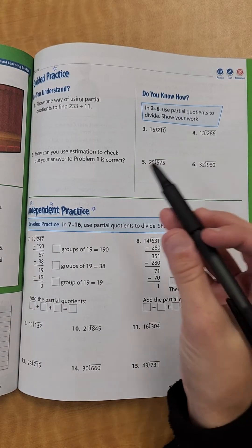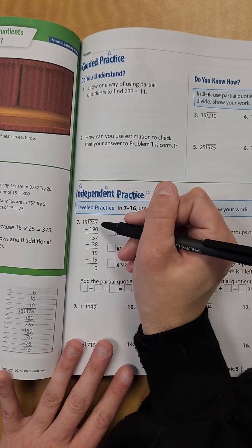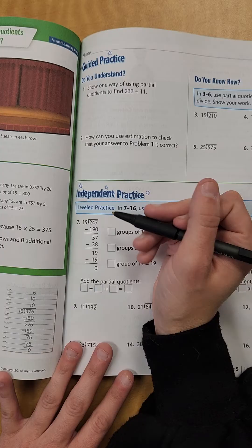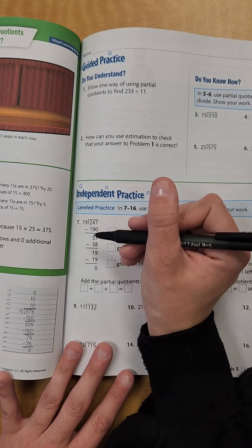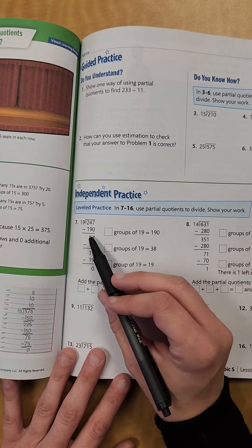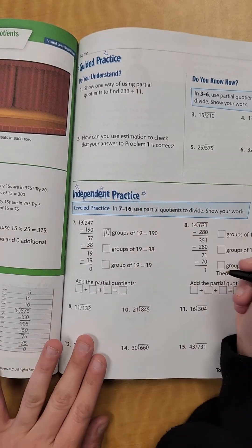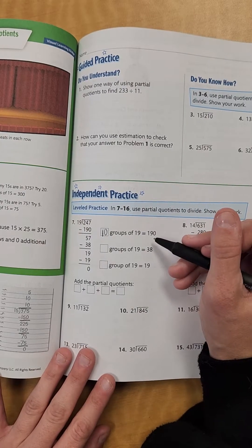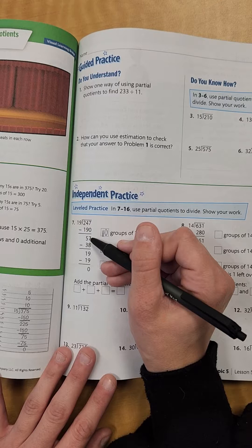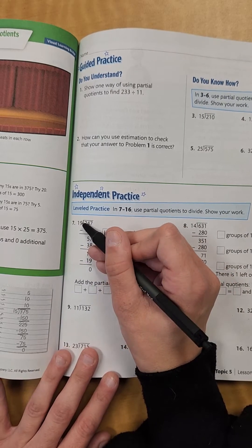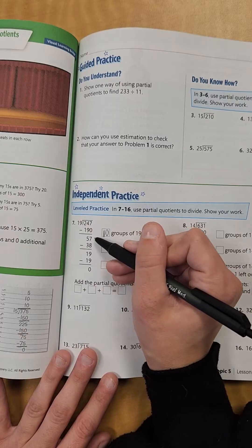On these examples right here, we have 247 divided by 19. So what we can do is we can say I can multiply 19 by 10 to give me 190. So that would be 10 groups of 19, which gives you 190. Then you would subtract that and you're left with 57.